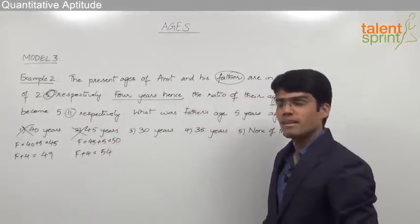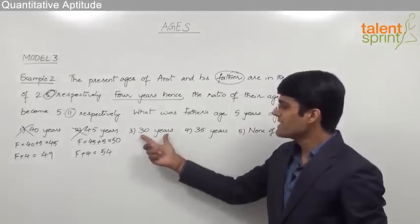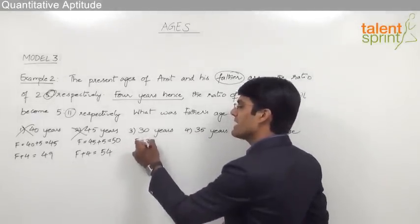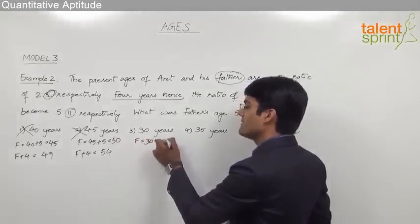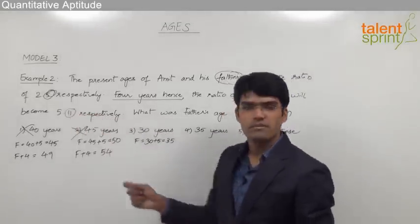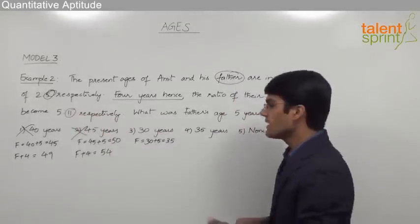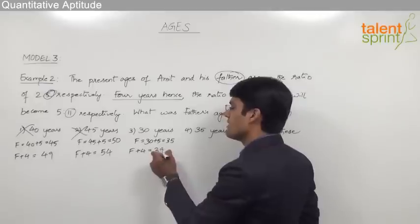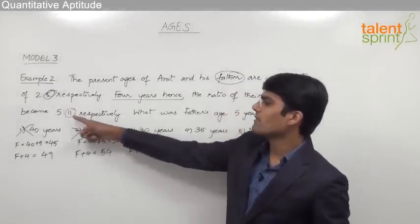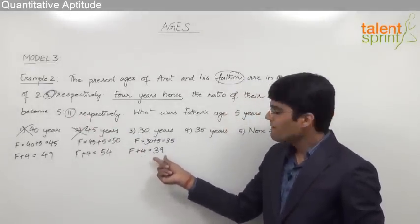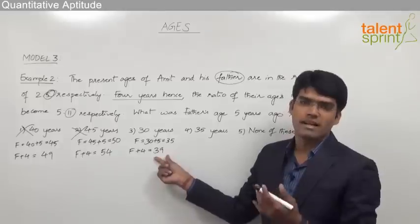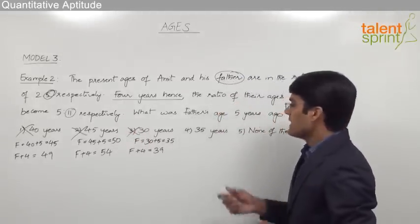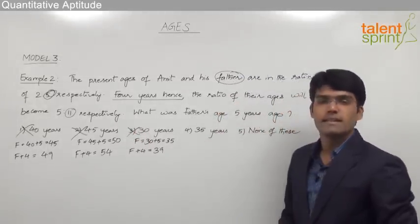For option three, father's age 5 years ago was 30, so father's present age is 30 plus 5 equals 35. Since 35 is a multiple of 5, the first condition is satisfied. For the second condition, father's age four years hence is 35 plus 4 equals 39, and 39 is not a multiple of 11, so option three is also cancelled.